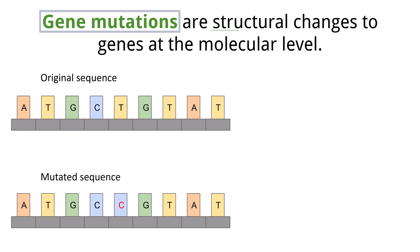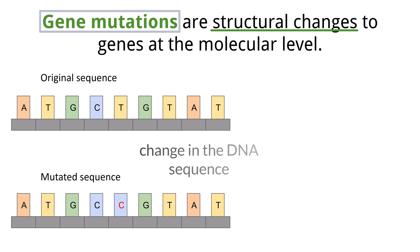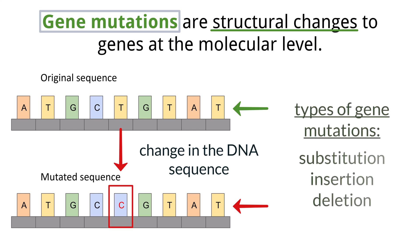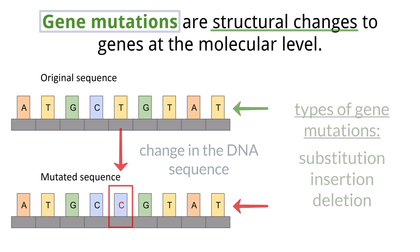A gene mutation is a structural change to a gene at the molecular level, meaning a change in the sequence of bases in DNA. Here, we can see the original sequence, and in the mutated sequence, a cytosine base has been substituted for the thymine. There are three main types of gene mutations: substitutions, insertions, and deletions. We'll talk through how each one works over the next few slides.